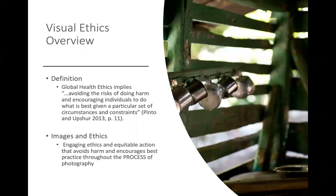So what are visual ethics, and why do they matter? Within global health, global health ethics is defined by Pinto and Upshur as avoiding the risks of doing harm and encouraging individuals to do what is best given a particular set of circumstances and constraints. Given the process of creating photographs, this is about figuring out how to work within those circumstances and constraints in which images are created, edited, and published. Images and ethics come into play because engaging equitable action that avoids harm throughout the process of photography is a critical part of sharing both the process and the results of epidemiological action.